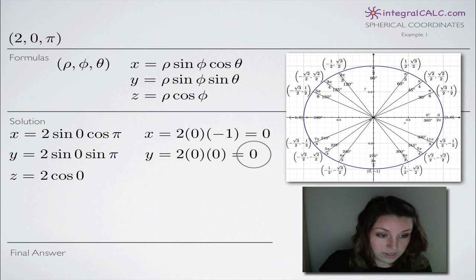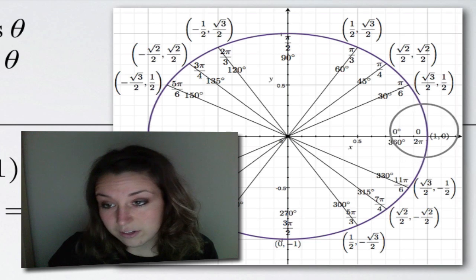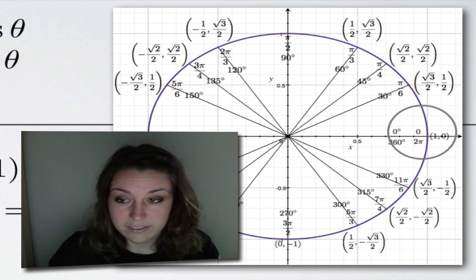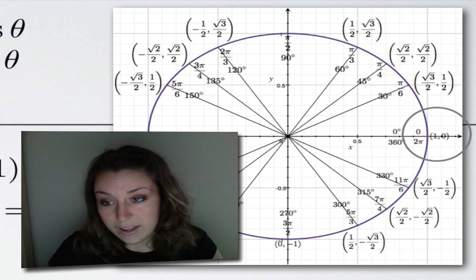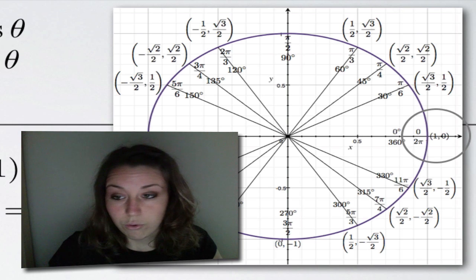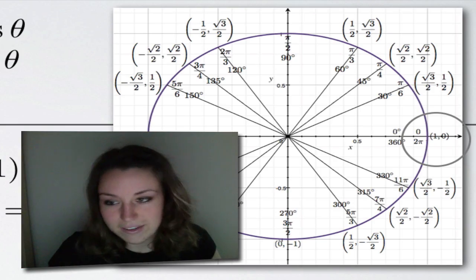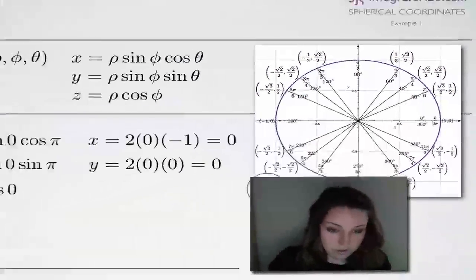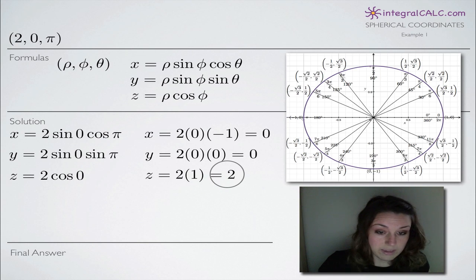Now for our z-coordinate, we look at the unit circle, find the place where the angle is equal to 0 — that's here along the x-axis — and take cosine of that angle. Cosine is the x-coordinate and sine is the y-coordinate. So cosine of 0 is the x-coordinate here, which is positive 1. Jumping back to our equation, z equals 2 times 1, which is equal to 2.